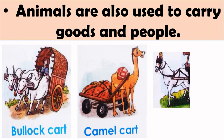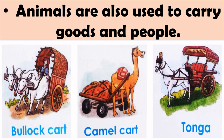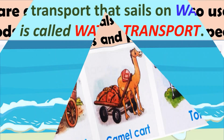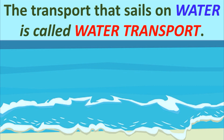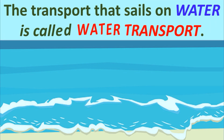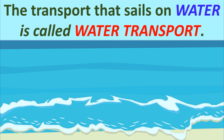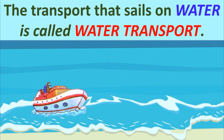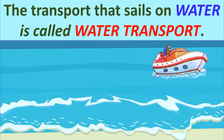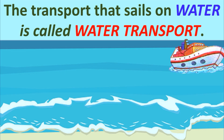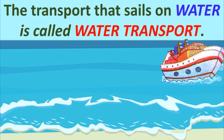You can see camel carts in the desert area, and you can see horse carts or tongas in hilly areas. Next is water transport. The transport or vehicles that sail on water is called water transport. Water transport is used to carry people and goods across the oceans, seas, rivers, and lakes. Ships carry a large number of people and goods over long distances.